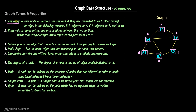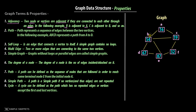Let's talk about adjacency. Two nodes or vertices are adjacent if they are connected to each other through an edge. In the following example, B is adjacent to C — you can see B and C are connected by this edge. But B and F are not adjacent because there is no direct edge between B and F. So B is adjacent to C but not adjacent to F.